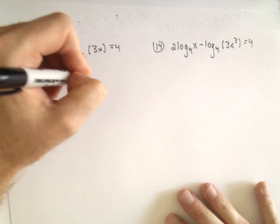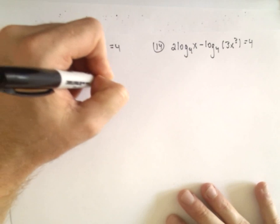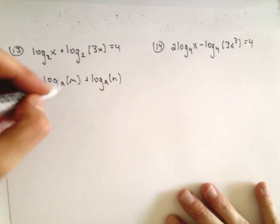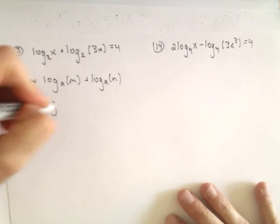But we do have the same base. And just to remind you of the property, it says if you have the same base but you have addition, we can rewrite that as a single logarithm using multiplication.